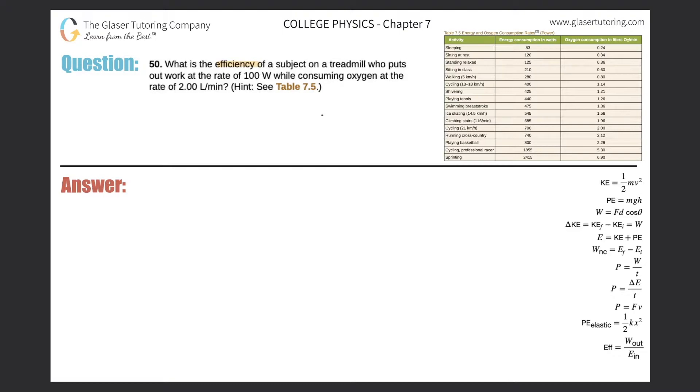Number 50, what is the efficiency of a subject on a treadmill who puts out work at the rate of 100 watts while consuming oxygen at the rate of two liters per minute?